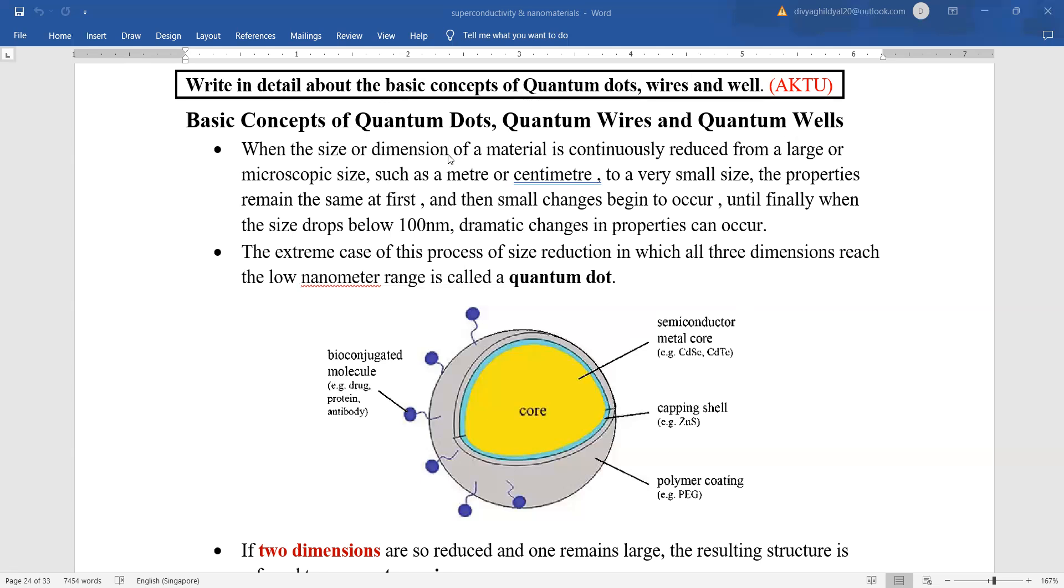Now, when the size or dimension of a material is reduced from large or microscopic size such as meter or centimeter to a very small size, the properties will remain the same but small changes will finally start to occur. When the size drops below 100 nanometers, dramatic changes in properties start occurring.